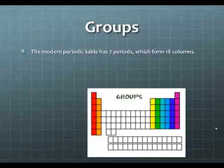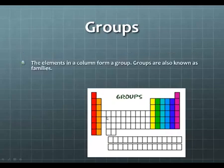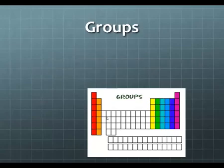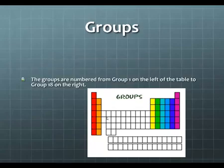Groups. The modern periodic table has seven periods, which form 18 columns. Inside of your notes, I want you to circle each group separately. So the first group here, circle it. The next group, circle it. The group in the center, circle all of these together. And then each one of these groups circle separately as well. The elements in a column form a group. Groups are also known as families. The groups are numbered from group 1 on the left of the table to group 18 on the right.